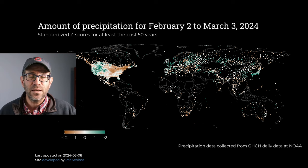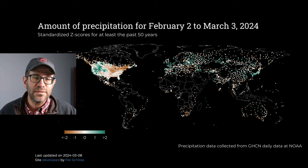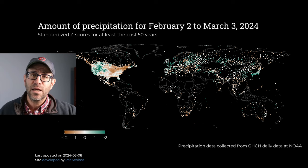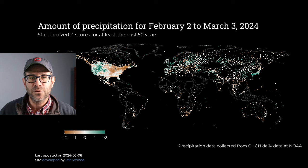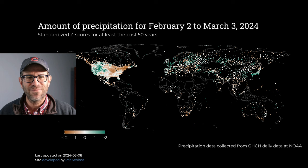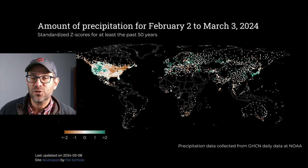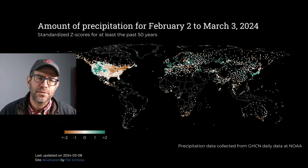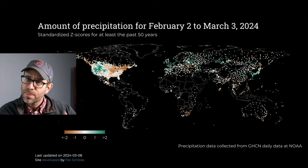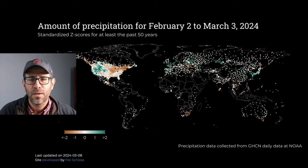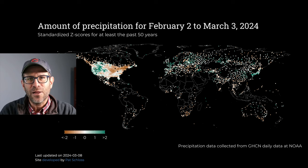In the west of the United States we see these green colors, which means it's been abnormally wet over the past month. And then where I live, just to the east of this black rectangle in Michigan, it's been actually quite droughty over the past month relative to the previous 50 years for that same window of time. We spent a lot of time developing this.